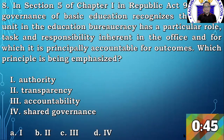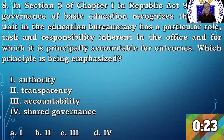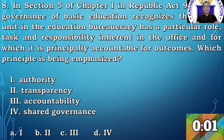Question number 8. In section 5 of chapter 1 in Republic Act 9155, the governance of basic education recognizes that every unit in the education bureaucracy has a particular role, task, and responsibility inherent in the office, and for which it is principally accountable for outcomes. Which principle is being emphasized? 1. Authority. 2. Transparency. 3. Accountability. 4. Shared governance. A1, B2, C3, D4. It's an easy question. We have last 5 seconds. 2, 1, 0. Time is up.